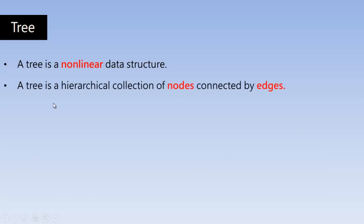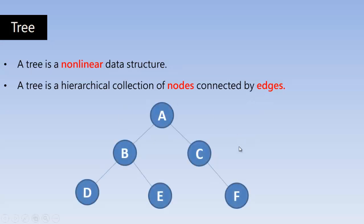A tree is a hierarchical collection of nodes connected by edges. See this figure represents the tree. So a tree is a hierarchical collection of nodes. These are the nodes which is representing the tree. This is the hierarchical collection. That means one thing having many things below it. And all these nodes are connected with each other by the edges.